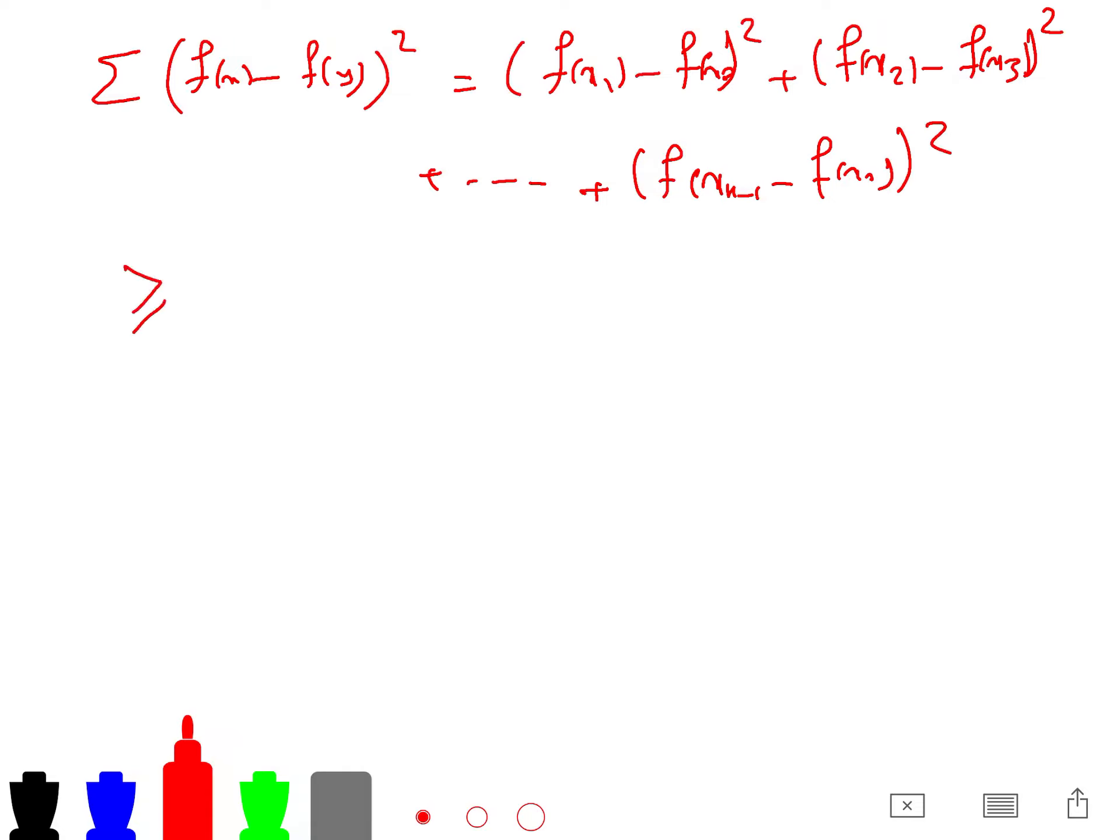And this is greater than, you can simplify that. It becomes (f(x1) - f(x2) + f(x2) - f(x3) + ...)^2, so you see. So it's telescopic sum and then it becomes (f(x1) - f(x_k))^2.